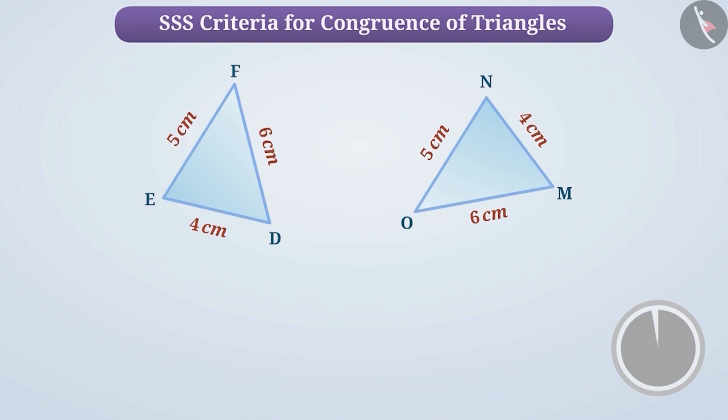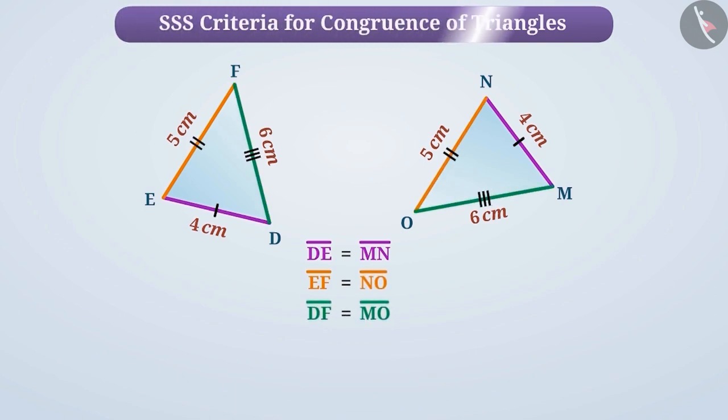Let me tell you. We can see that in triangle DEF and triangle MNO, DE equals MN, EF equals NO, and DF equals MO. That is, their corresponding sides are equal. So, by SSS congruence rule, triangle DEF and triangle MNO are congruent triangles.